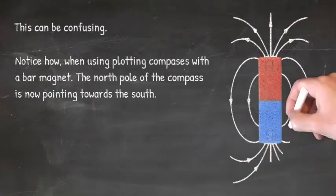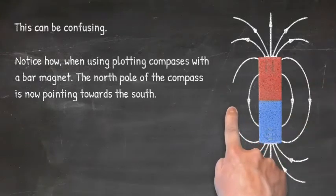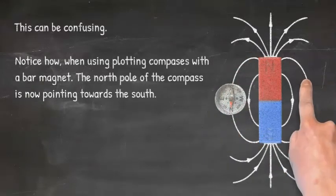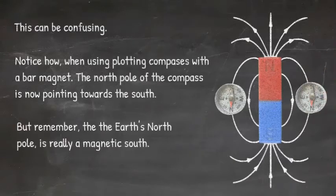This can be confusing. Notice how when using plotting compasses with a bar magnet, the north pole of the compass is now pointing towards the south. But remember, the earth's north pole is really a magnetic south.